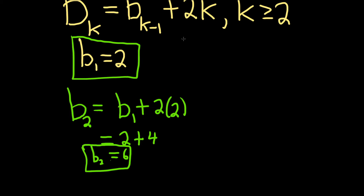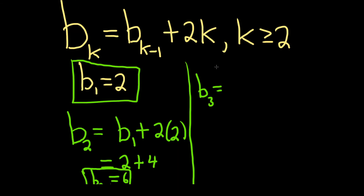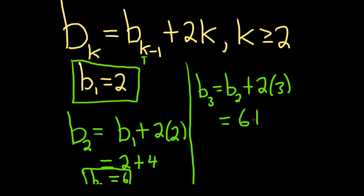Now let's find b sub 3. We plug in 3 for all of the k's, giving us b sub 2 plus 2 times 3. b sub 2 is 6, so we have 6 plus 6, and b sub 3 is equal to 12.